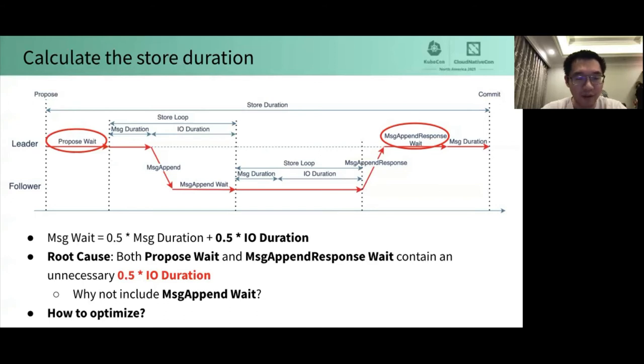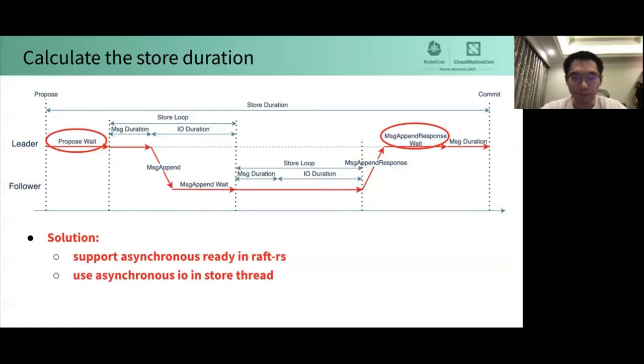Obviously, we need to move the IO process out of the store threads. Given that Raft-RS have to wait for all the entries in ready to be written before proceeding to the next round, we need to support asynchronous ready to break this limitation. In addition, store threads needs to use asynchronous IO to cooperate with asynchronous ready. Note that although we call it asynchronous IO, for now we do not use Linux asynchronous IO technology such as AIO, IO_uring. We just simply move the IO process to the dedicated IO threads in the current implementation.